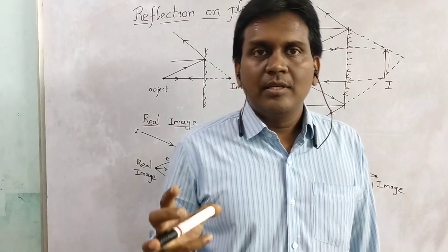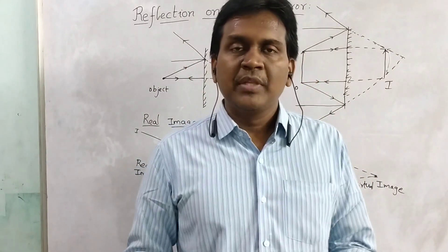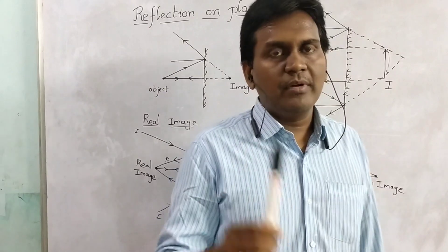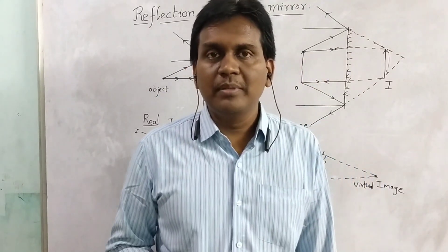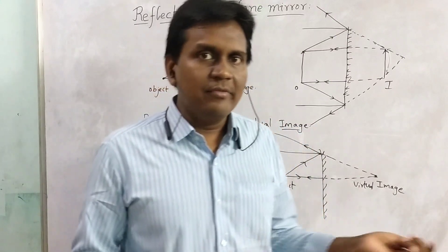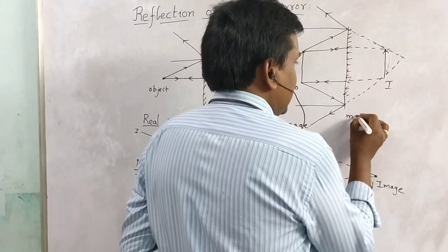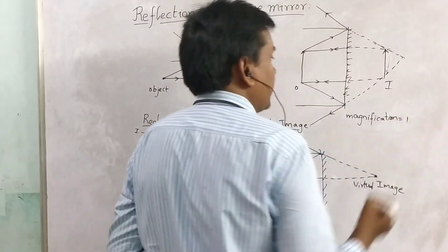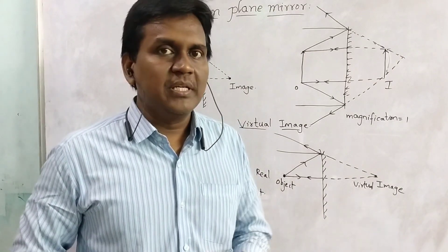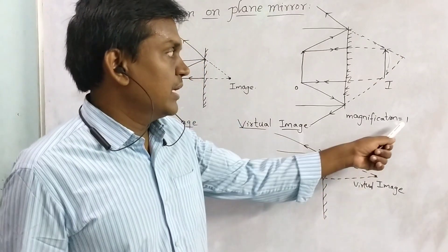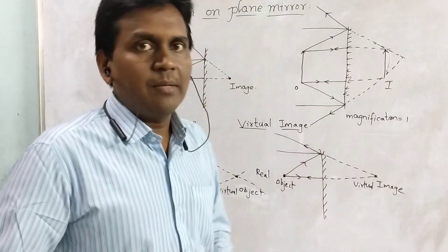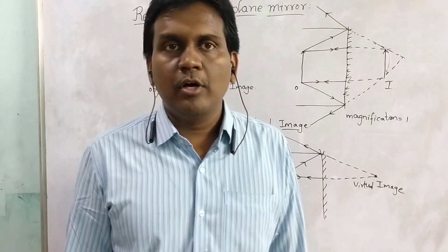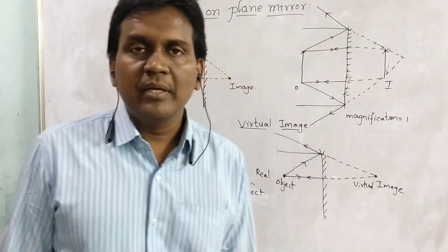The distance of the object will be equal to the distance of the image. If the object distance is 10 cm away from the mirror, the image distance will also be 10 cm away from the mirror. And if you consider the magnification for a plane mirror, since the distances are the same, the magnification equals image distance divided by object distance, which is 10 cm divided by 10 cm, giving us 1. So the magnification for a plane mirror is 1, because the size of the image equals the size of the object. For a spherical mirror, the image may be smaller or bigger, but for a plane mirror there is no magnification — it is equal to 1.